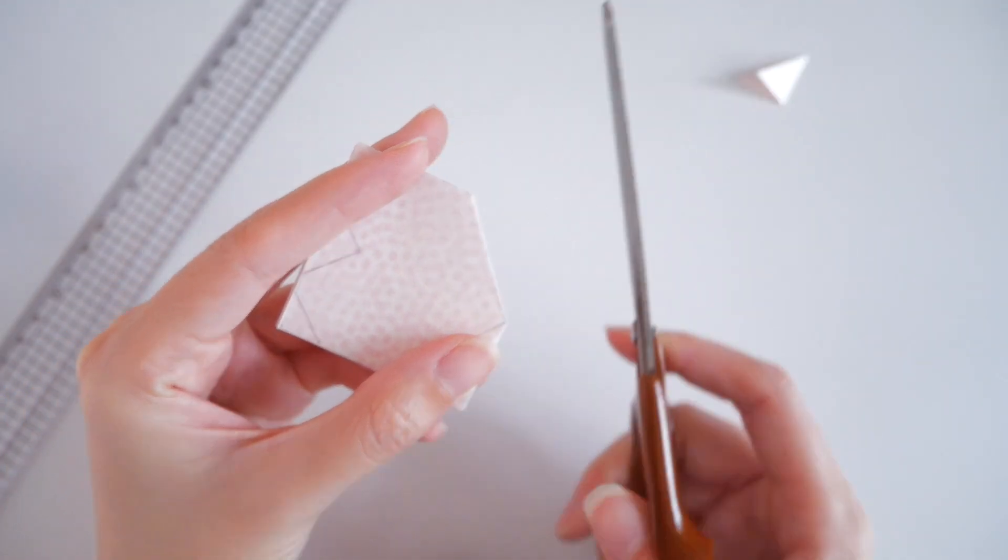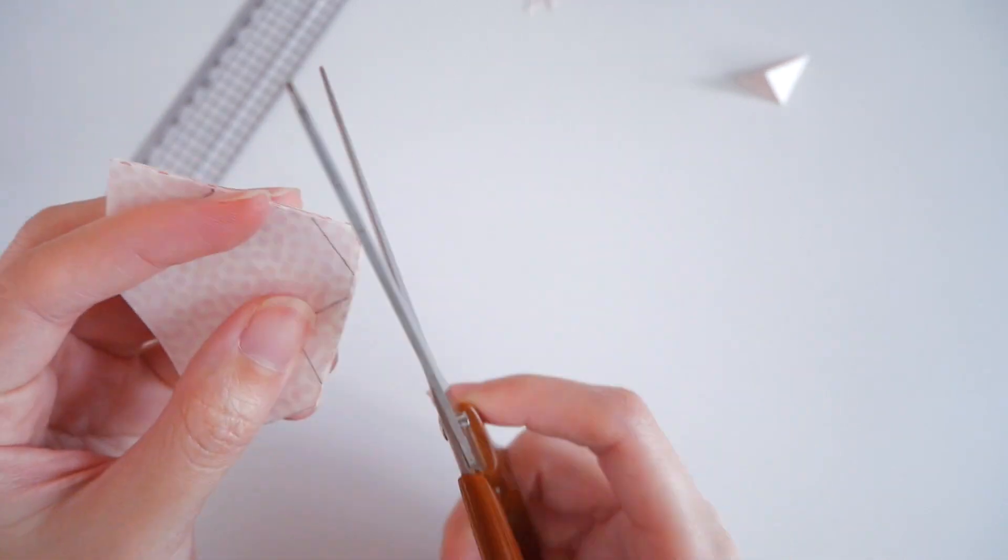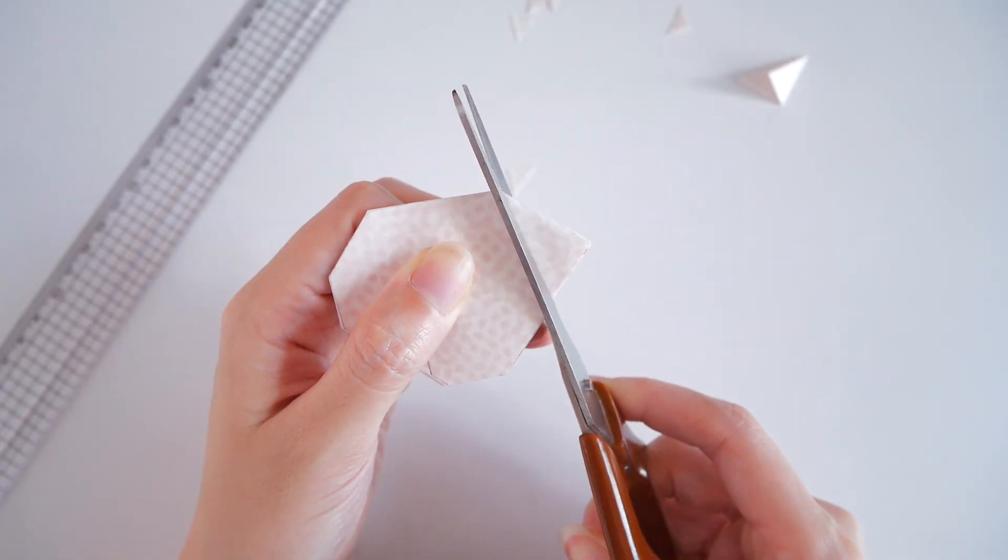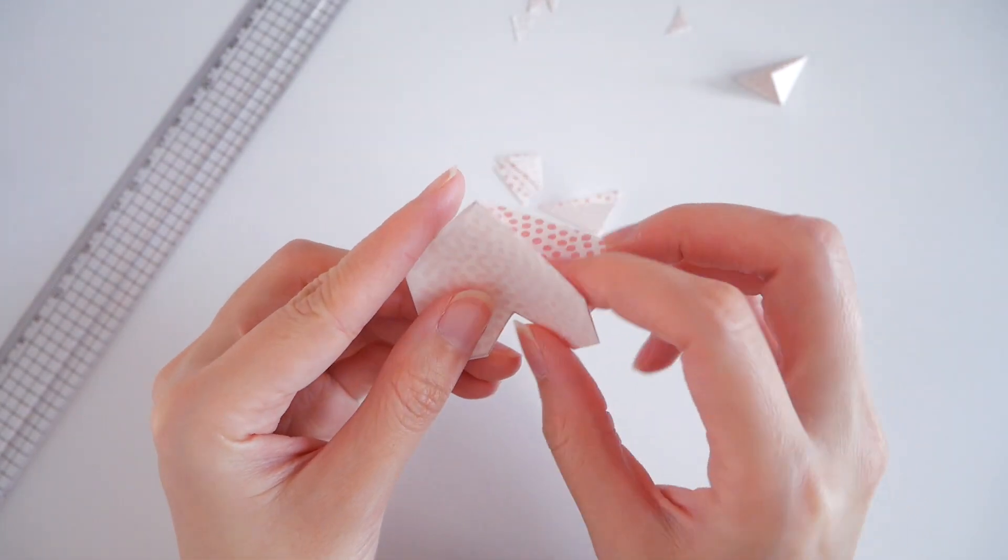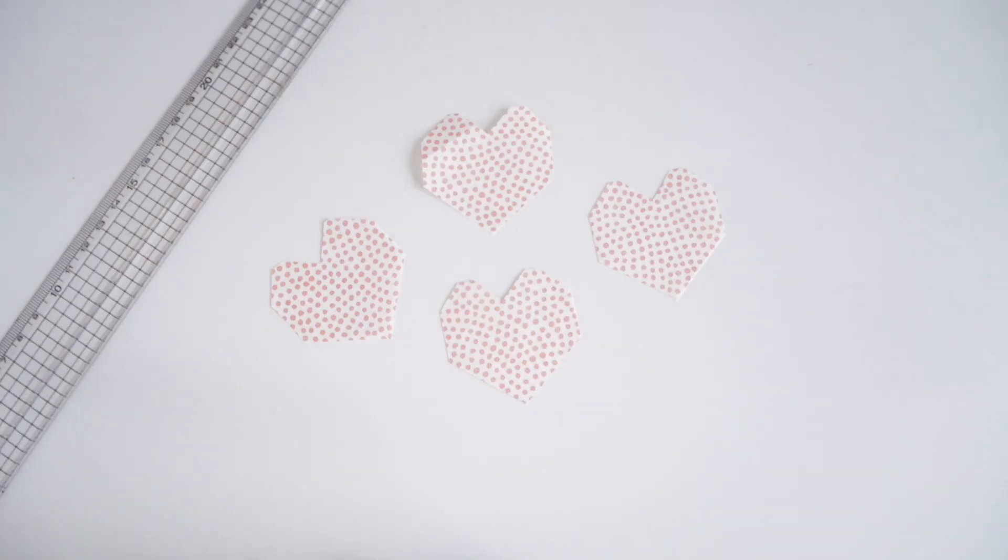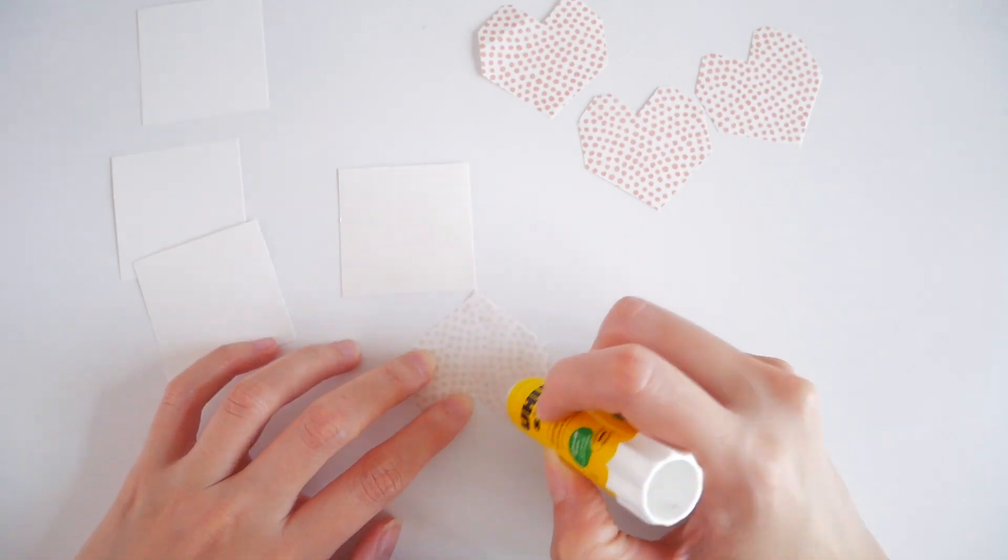Once it's folded, trim away the excess beads. Next, I pasted the heart shapes on the individual square cards.